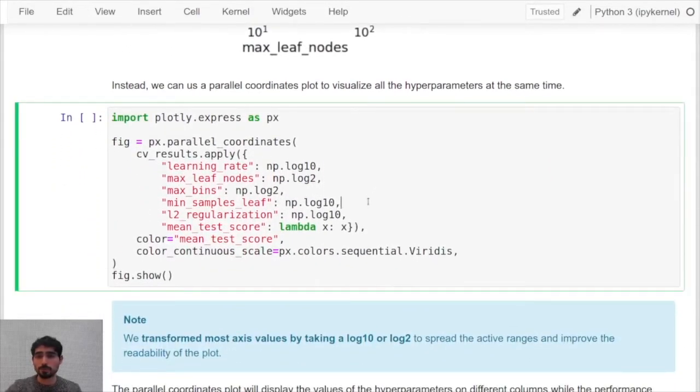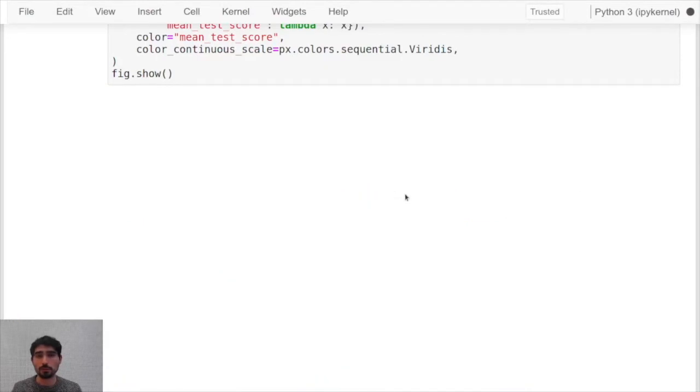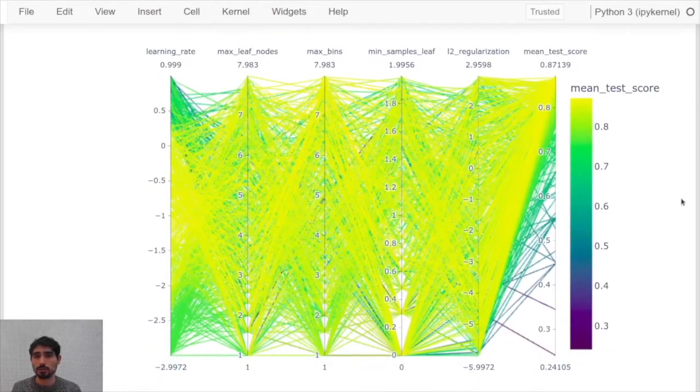One option is to use the so-called parallel coordinate plot, which also encodes with colors the mean test score.